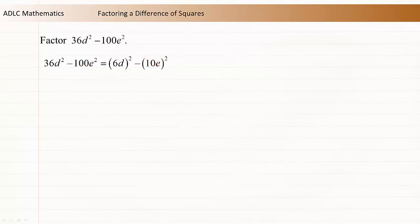6d all squared minus 10e all squared is the difference of squares, so we can use the difference of squares relationship. x squared minus y squared is equal to x plus y times x minus y. So the factors are 6d plus 10e and 6d minus 10e.